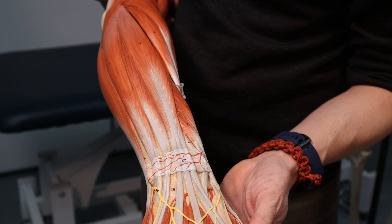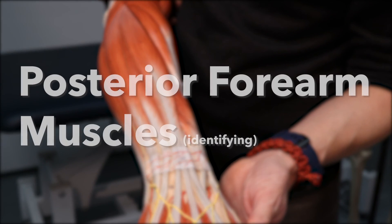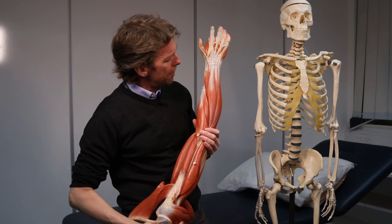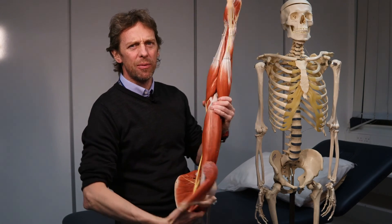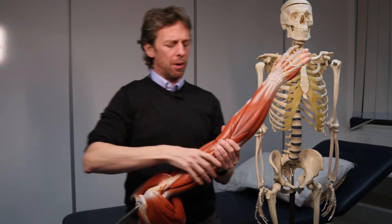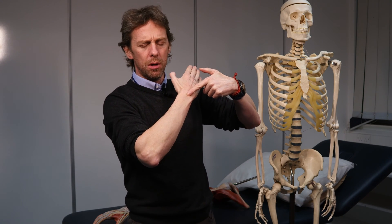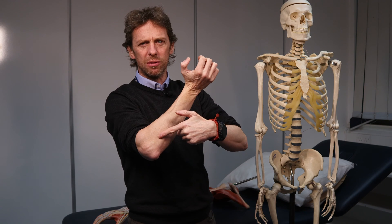The posterior forearm is a little more complex than the anterior forearm, but the same principles apply: where does the muscle go, and what action does it give? Sprinkle on a little Greek and Latin and we'll either work out the name correctly or get close enough that our brain pops the right word into our heads.